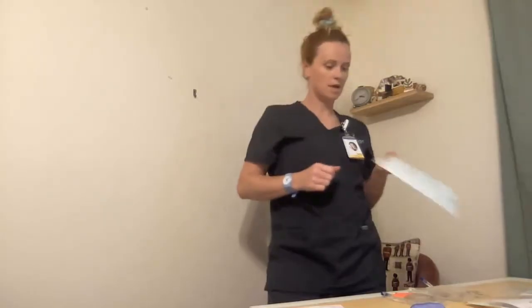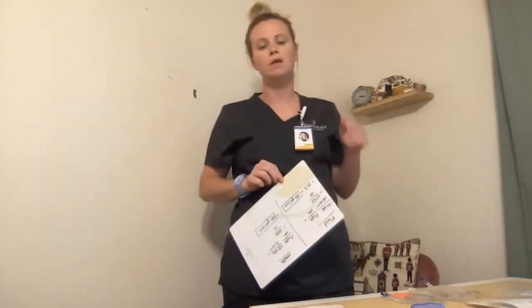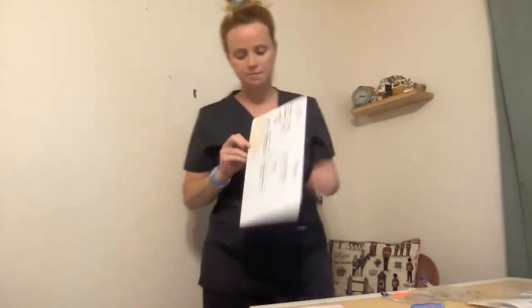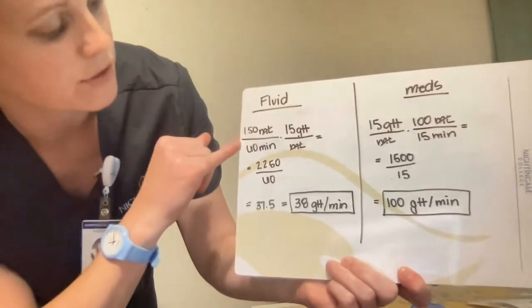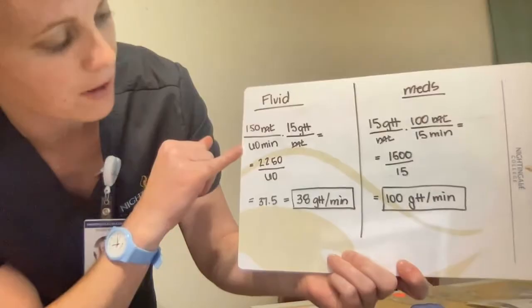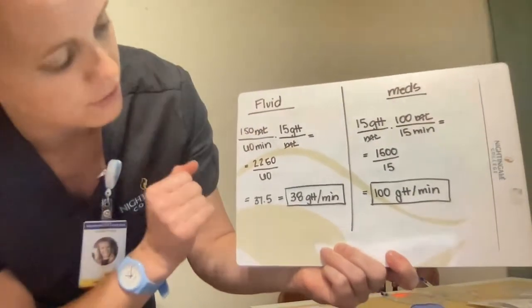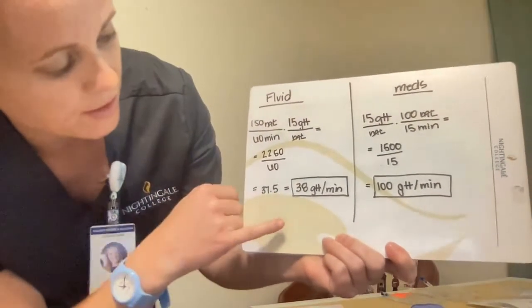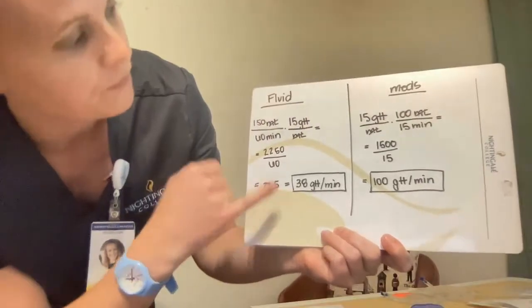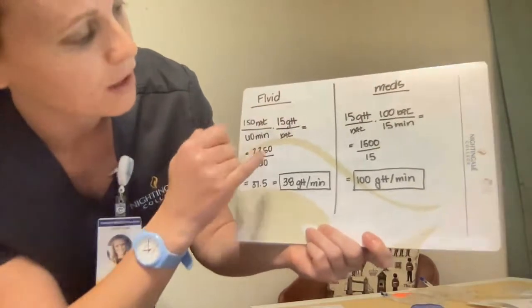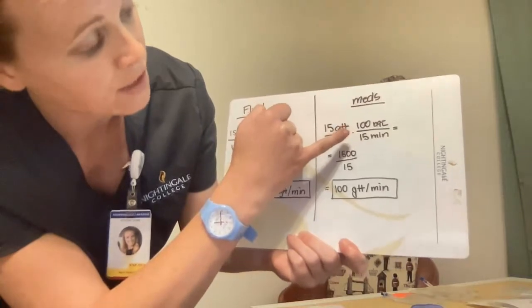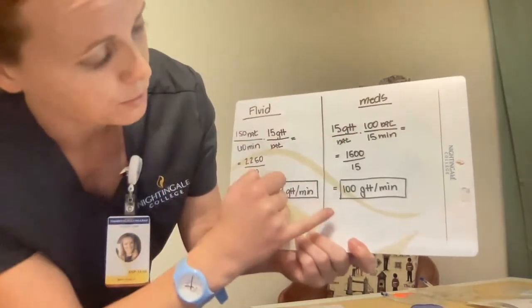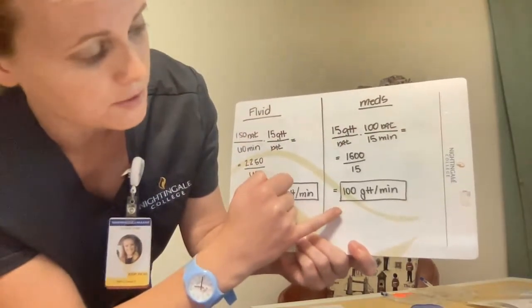For my patient today, she's going to be receiving fluid and IV medication — amoxicillin. I have done the work for both of those. The physician ordered 150 ml to run over 60 minutes with a drop factor of 15, which works out to 38 drops per minute. For the medication, same drop factor of 15, 100 ml to run over 15 minutes, so 100 drops per minute.